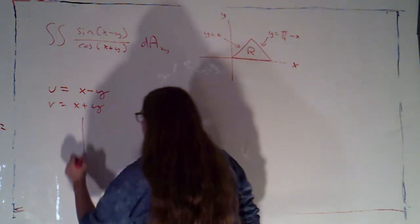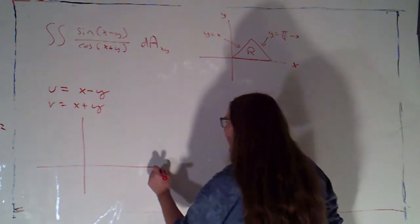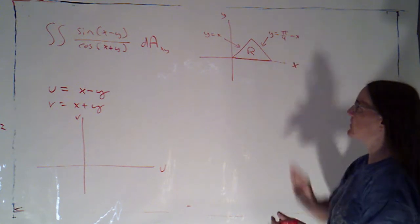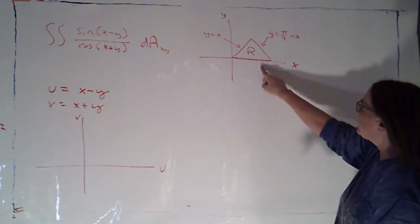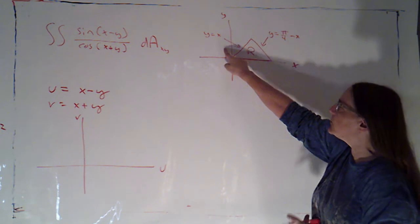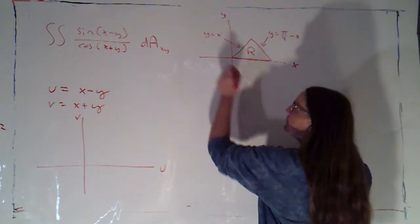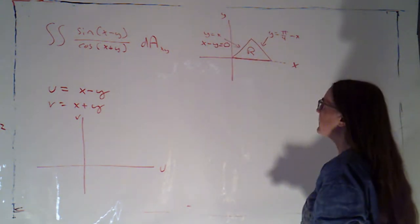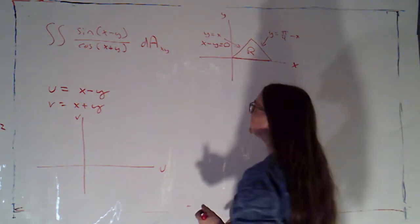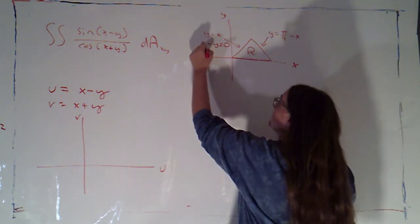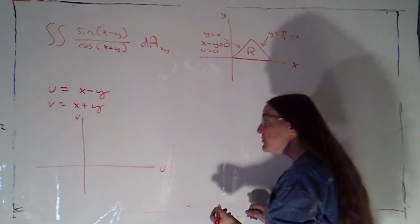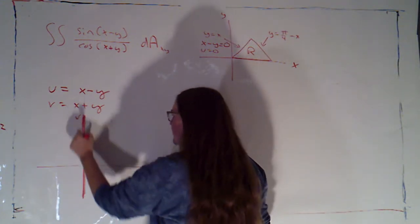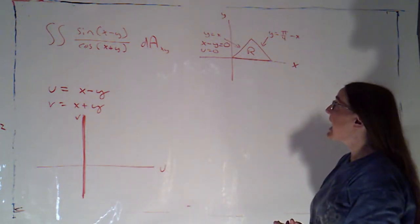So I need to figure out what my region S is in the uv-plane if I use that transformation. If I take a look here, this was y equals x. Notice if y equals x, that means x minus y equals zero, which becomes u equals zero. So u equals zero — the v-axis — is going to be a boundary curve for my region S.